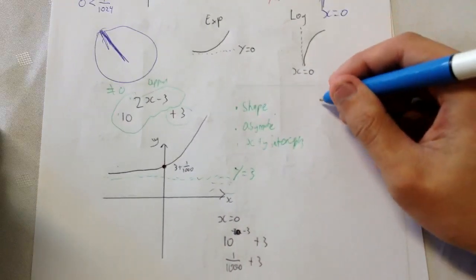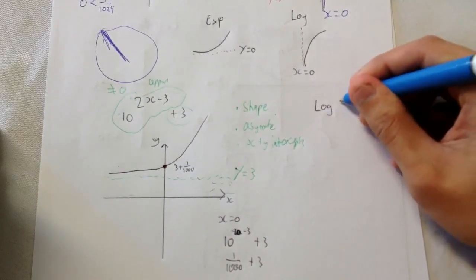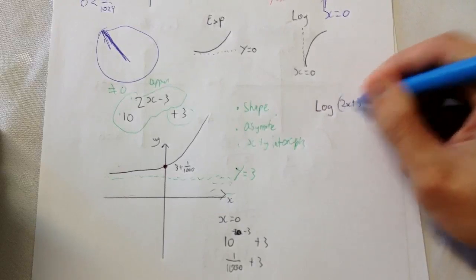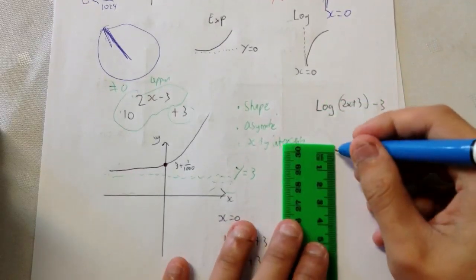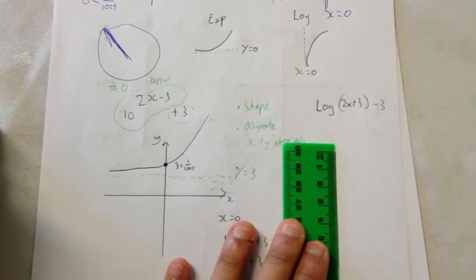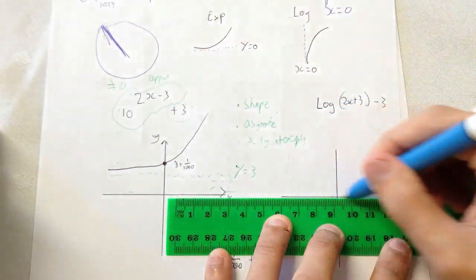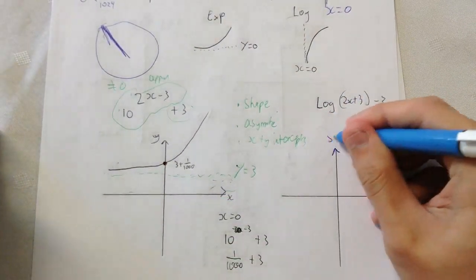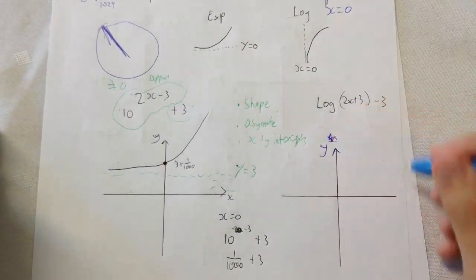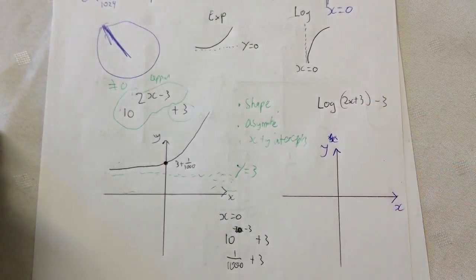I'll show you how to draw a log graph now. So let's say log 2x plus 3 minus 3. It's a little bit out of focus. I'm just going to focus it in a bit. That's better. It's a bit messy. But I hope it makes sense. Richie, does it make sense? Does it look like it makes sense? Yeah. Okay. Cool.